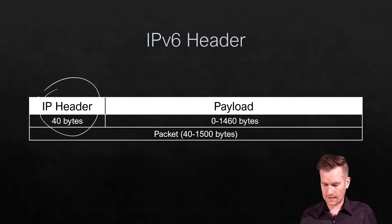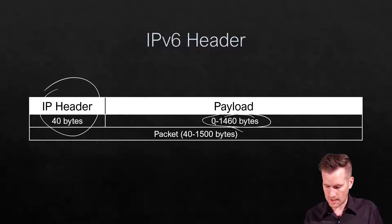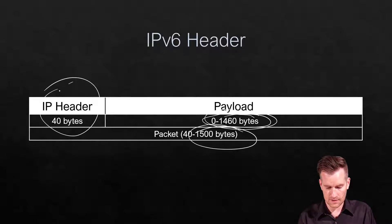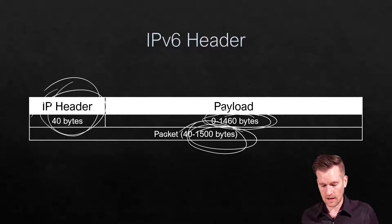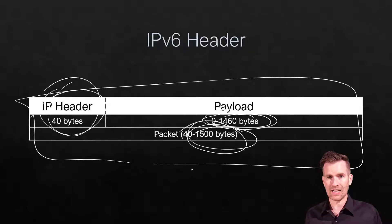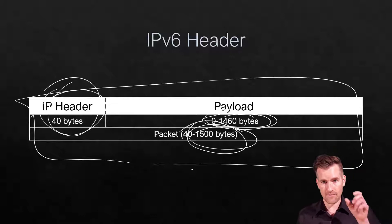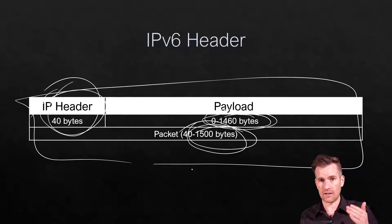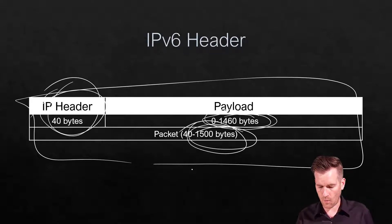The payload can be anywhere from 0 to 1460 bytes, which makes sense: if our maximum transmission unit is 1500, then 1460 plus our 40-byte header adds up to 1500. If we have jumbo frames turned on, we can actually go up to 65,536 bytes, but typically our MTU is 1500.